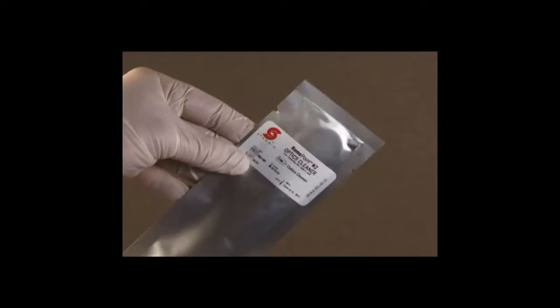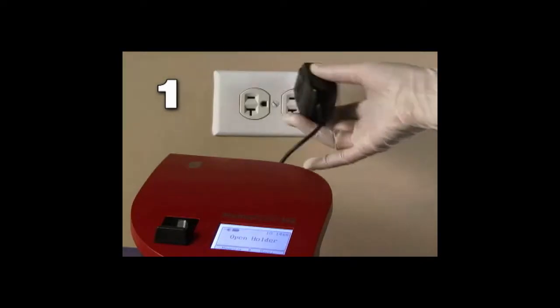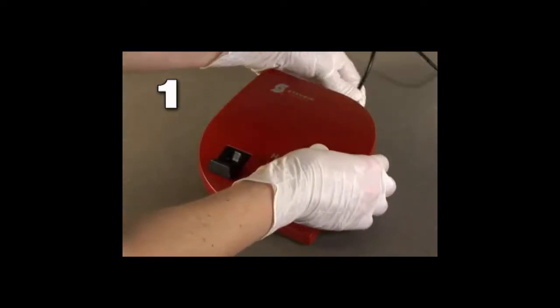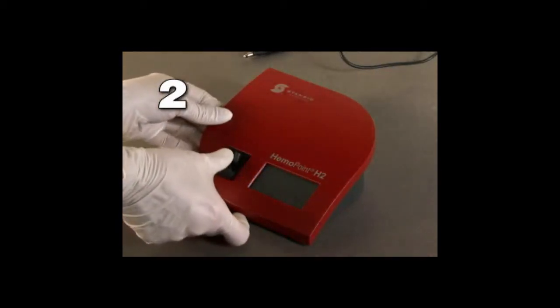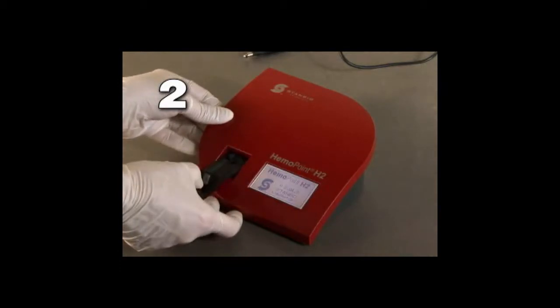For cleaning the optical unit, the use of special Hemopoint H2 Optics Cleaner is recommended. The optics cleaner can be obtained through an authorized stand bio-distributor. To safely clean the Hemopoint H2 photometer optics, disconnect the power adapter from the electrical connection before proceeding. With the Hemopoint H2 in the ready mode, open the cuvette holder until you feel a resistance and the holder will not extend further. Locate the silver pin on the left-hand side of the cuvette holder.